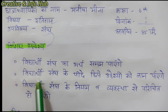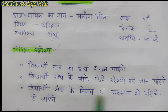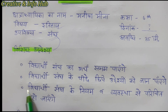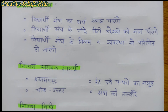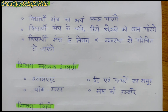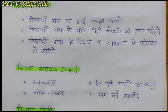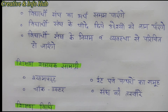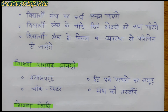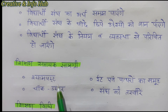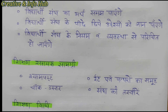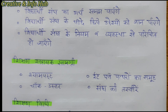Starting the lesson plan — at the top, center of the page, you write 'Paath Yojana'. On the left side, write the chhatra adhyaapika ka naam (student teacher's name). Below that, write the subject — Itihaas (History) — and then the sub-topic or prakaran. On the right side, write kaksha (class), dinank (date), and avdi (duration). Today's lesson plan is for Class 6, duration 30 minutes, and the date is left blank to be filled on the day of delivery.